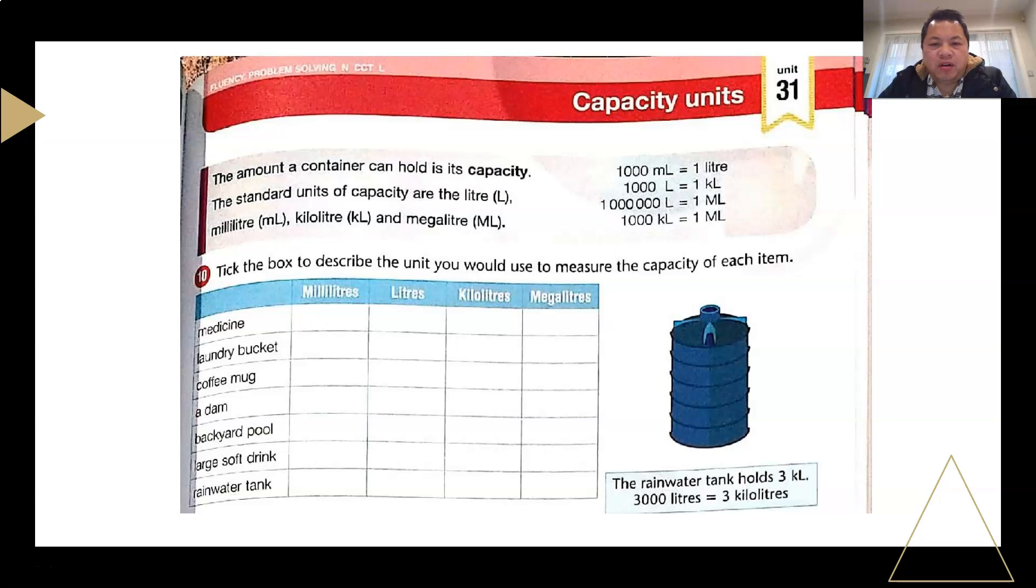Moving on to the next page. So now we are on capacity, which is very much related to volume. Two things that you need to know is actually the conversion of units, so 1,000 milliliters is 1 liter, 1,000 liters is 1 kiloliter, and 1 million liters is 1 megaliter. So 1,000 kiloliters is actually 1 megaliter, as you can see, they are all related with three zeros. Just bear that in mind, later on, I will be touching on this again.